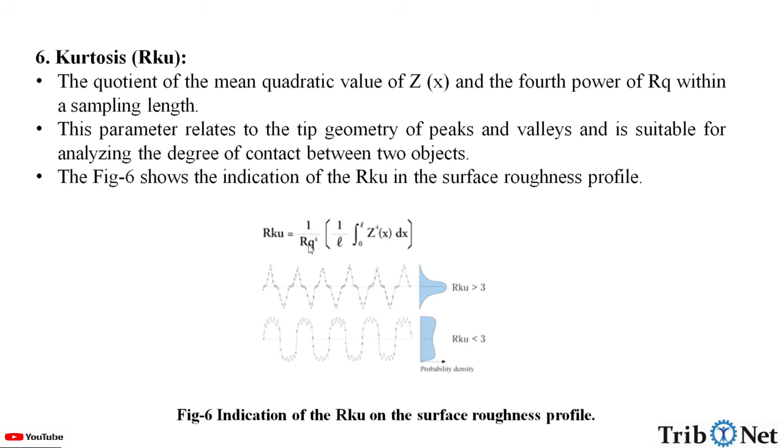And the formula for RKU is given by 1 by Rq to the power 4, whole bracket 1 by L in the limit of 0 to L, Z to the power 4 of x dx. Here, we can see the probability density graphs of RKU, which is greater than 3 and less than 3.